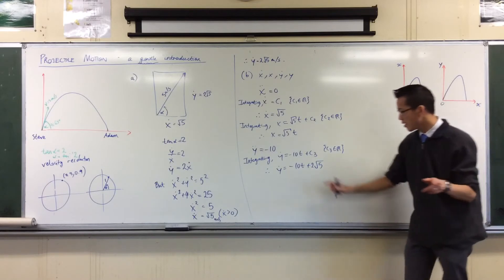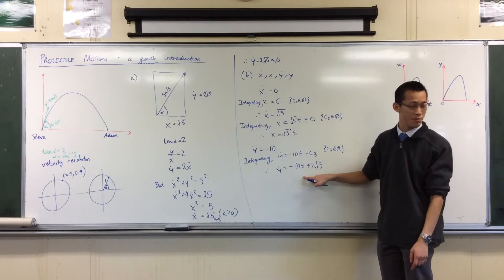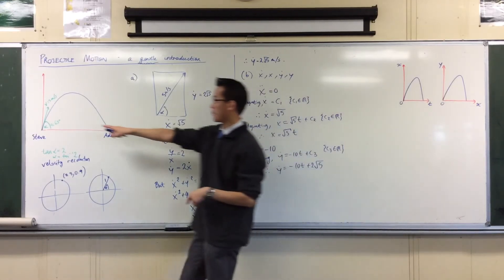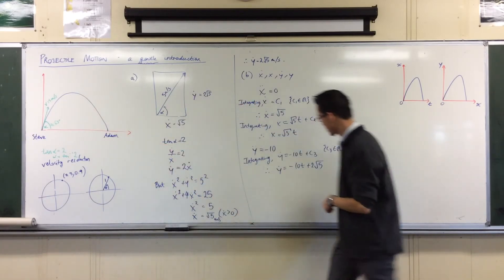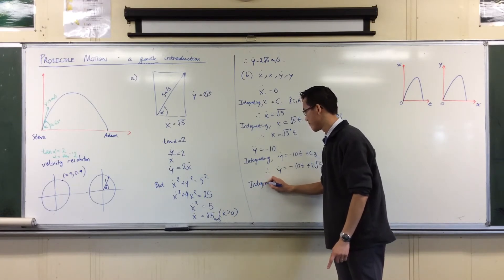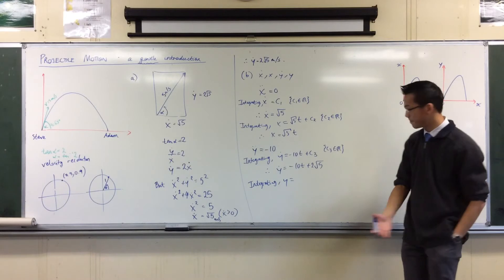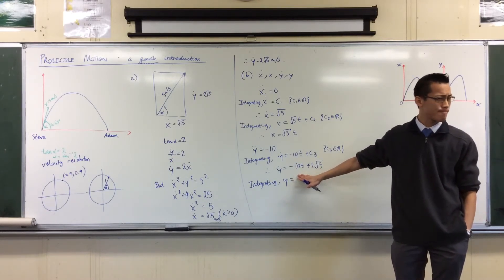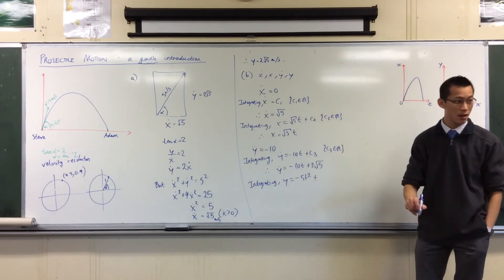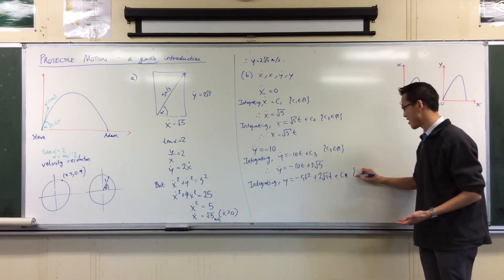And as you can see, as t gets bigger, this stays where it is, but this number here will get increasingly negative. Eventually it'll take over and that's why it comes back down. We can integrate again, and this will give us vertical displacement. What happens? Negative 5t squared plus 2 root 5t plus the fourth and last constant. We got there.